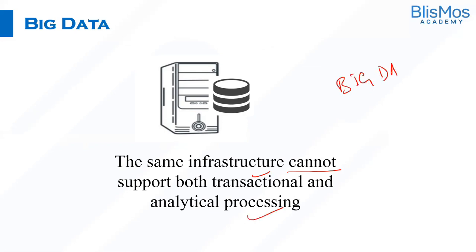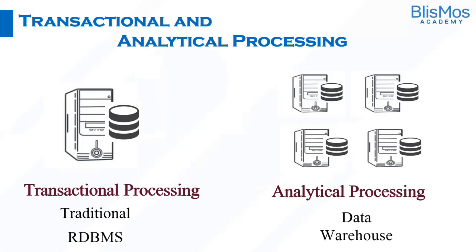The same infrastructure cannot support both transactional and analytical processing in case of big data. For transactional processing we use a traditional RDBMS, and for analytical processing we have systems called data warehouses. Transactional processing is supported by relational database management systems and analytical processing is supported by data warehouses.